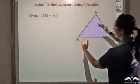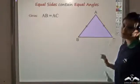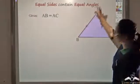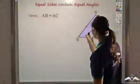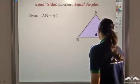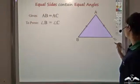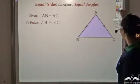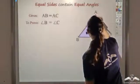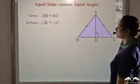Let us say that the two equal sides are AB and AC. Now which two angles would be equal? Note that these two sides are meeting at vertex A, so leaving A, the other two angles — which are angle B and angle C — should be equal. So what I want to prove is that angle B would be equal to angle C. For that, I will draw a perpendicular from vertex A to BC.